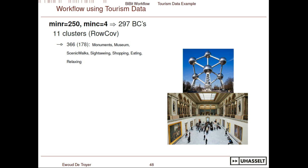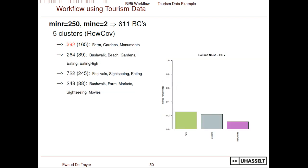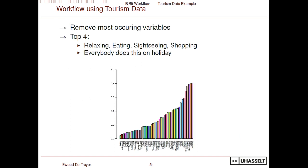If we choose more clusters to look at smaller patterns with more people doing them — say eleven clusters — we see activities more related to visiting monuments and museums appearing. Other smaller patterns include visiting farms, markets, and sightseeing. Going further to even smaller bi-clusters starting from two columns, we find very strong patterns, like people combining gardens, monuments, and farms together, with more than 16% of people doing this all the time. However, relaxing, eating, sightseeing, and shopping were always appearing — because those are activities everybody wants to do on holiday, so they're not that informative.